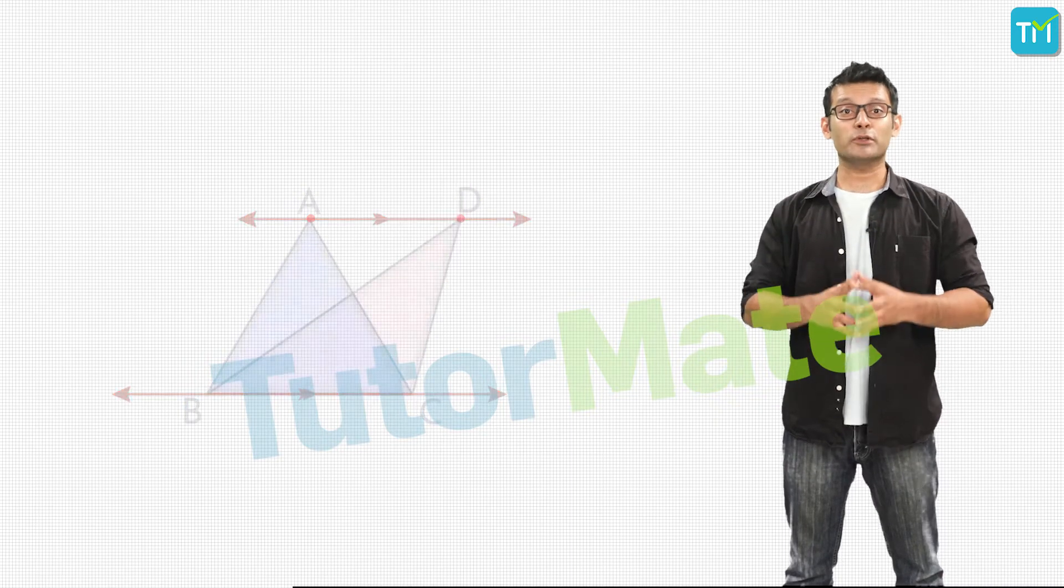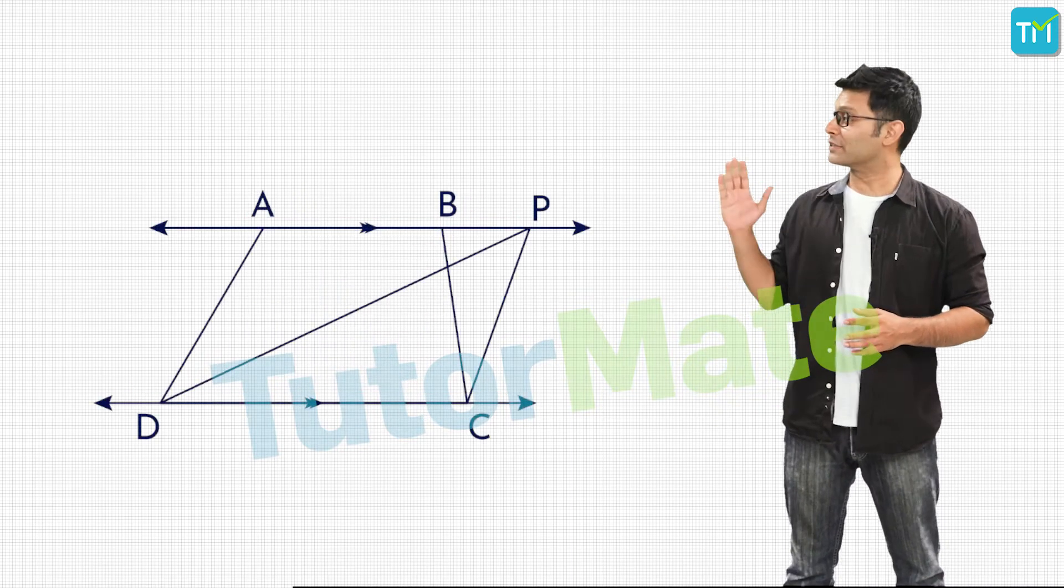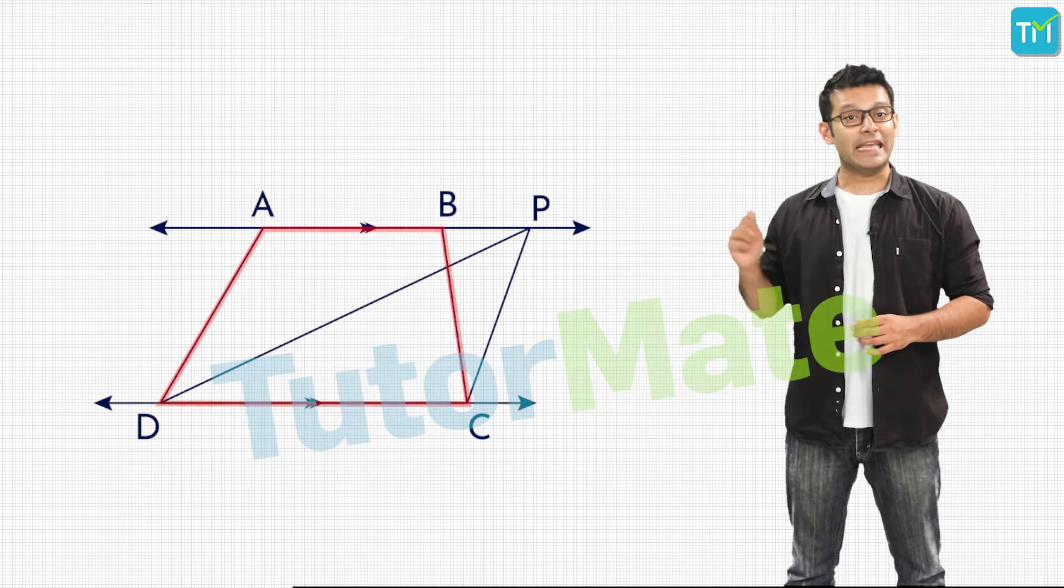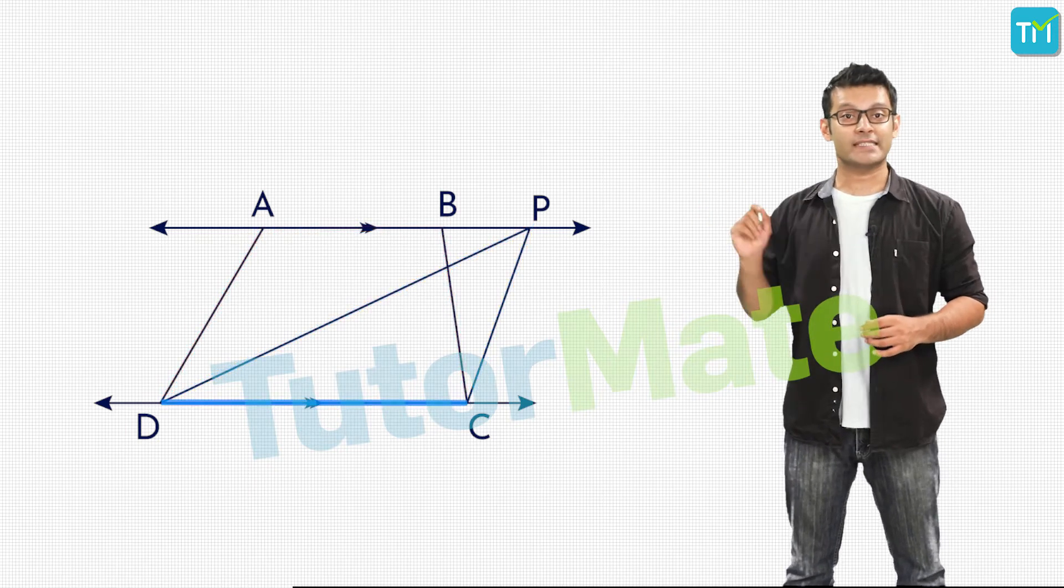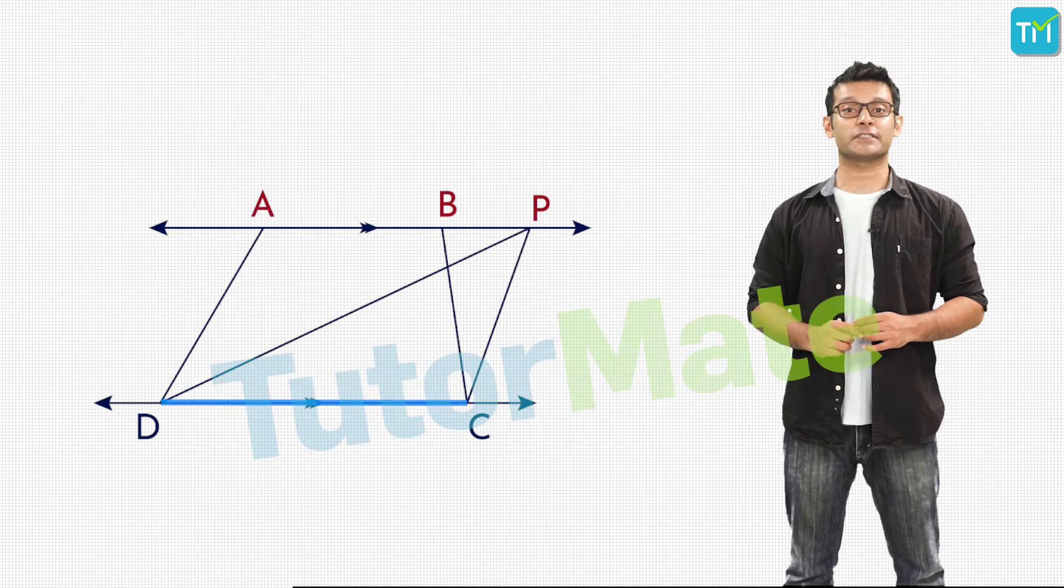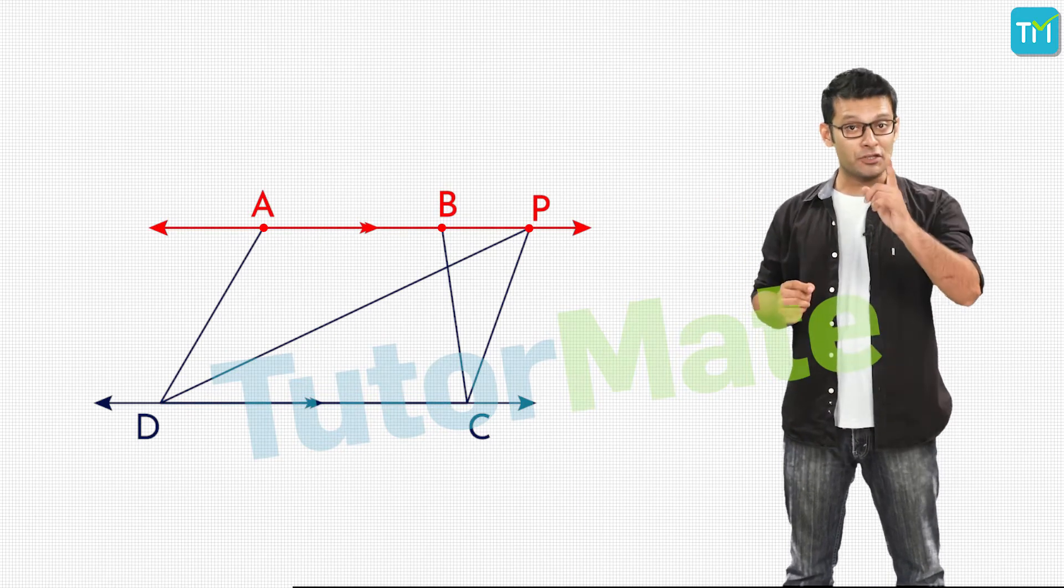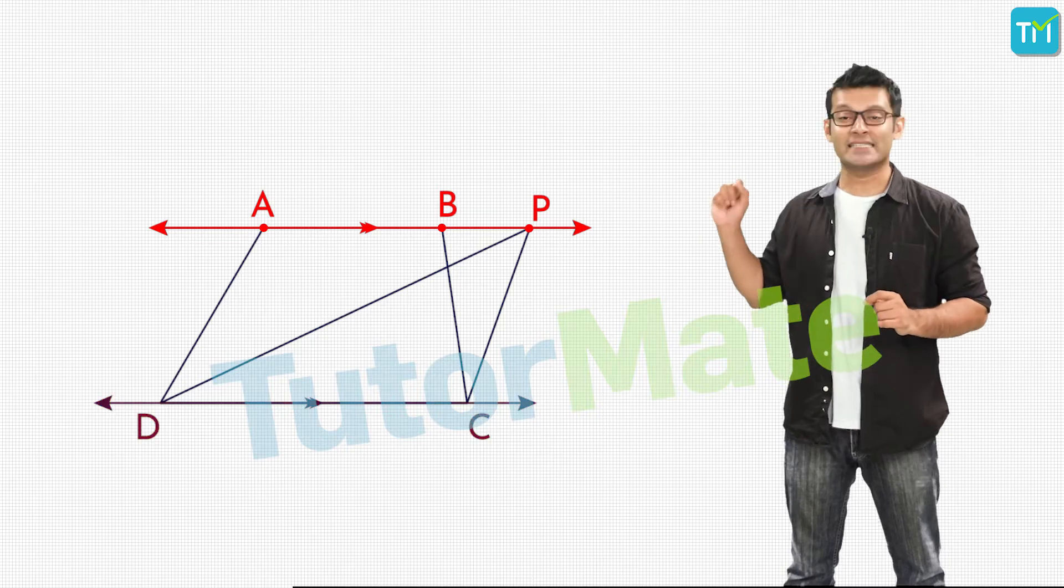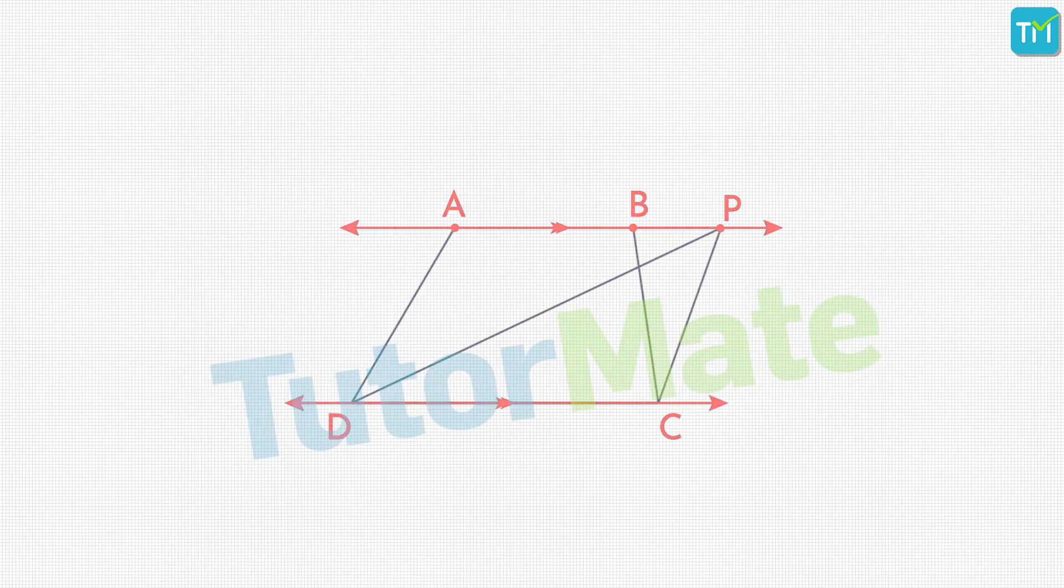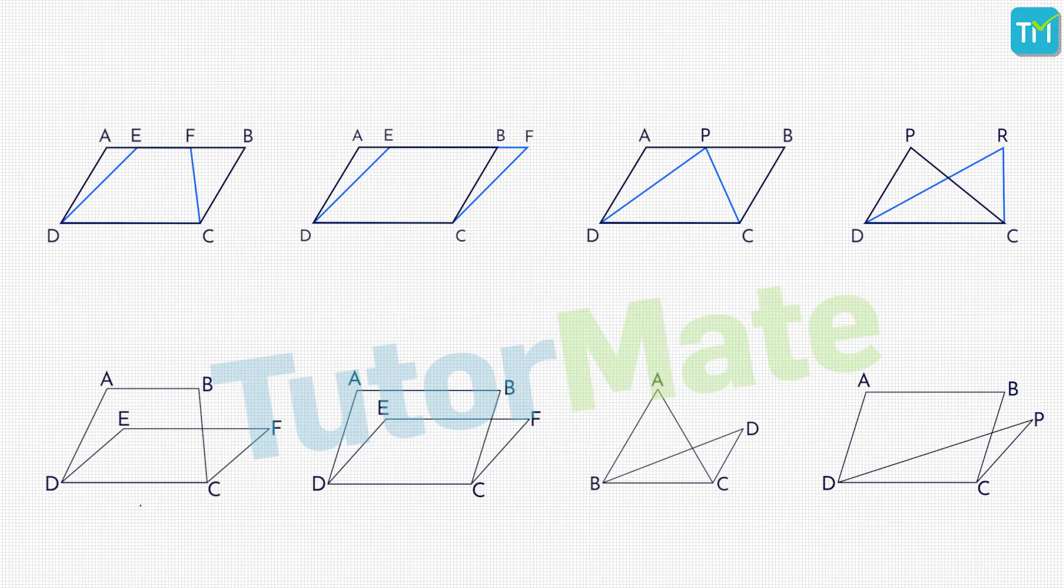Finally, when we put a triangle and a quadrilateral together, ABCD and PDC have a common base CD and opposite vertices AB and P all lie on the same line which is parallel to the common base DC. So, what can we conclude from these two sets of figures that we saw so far?